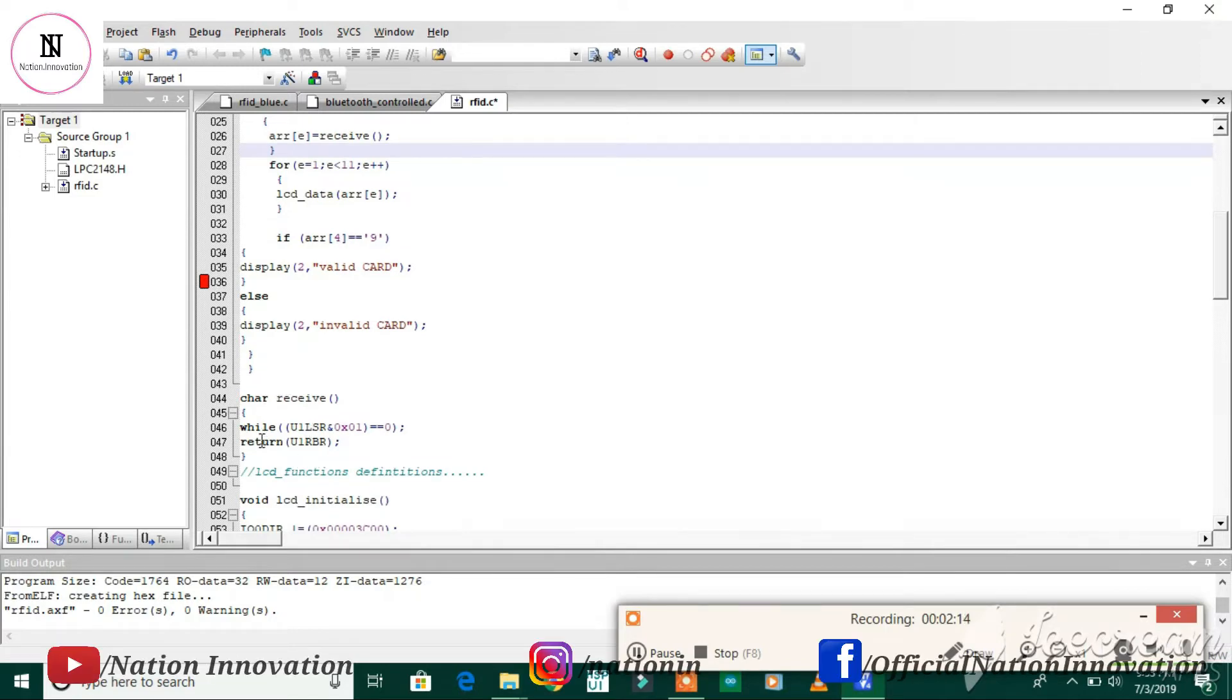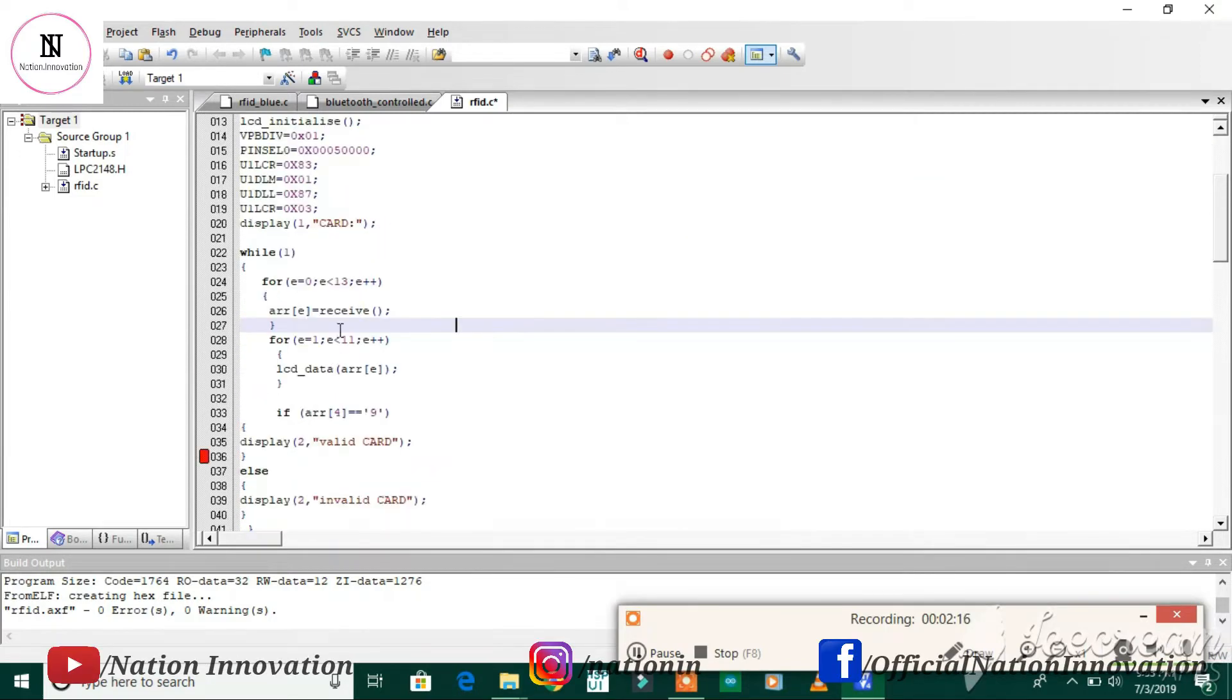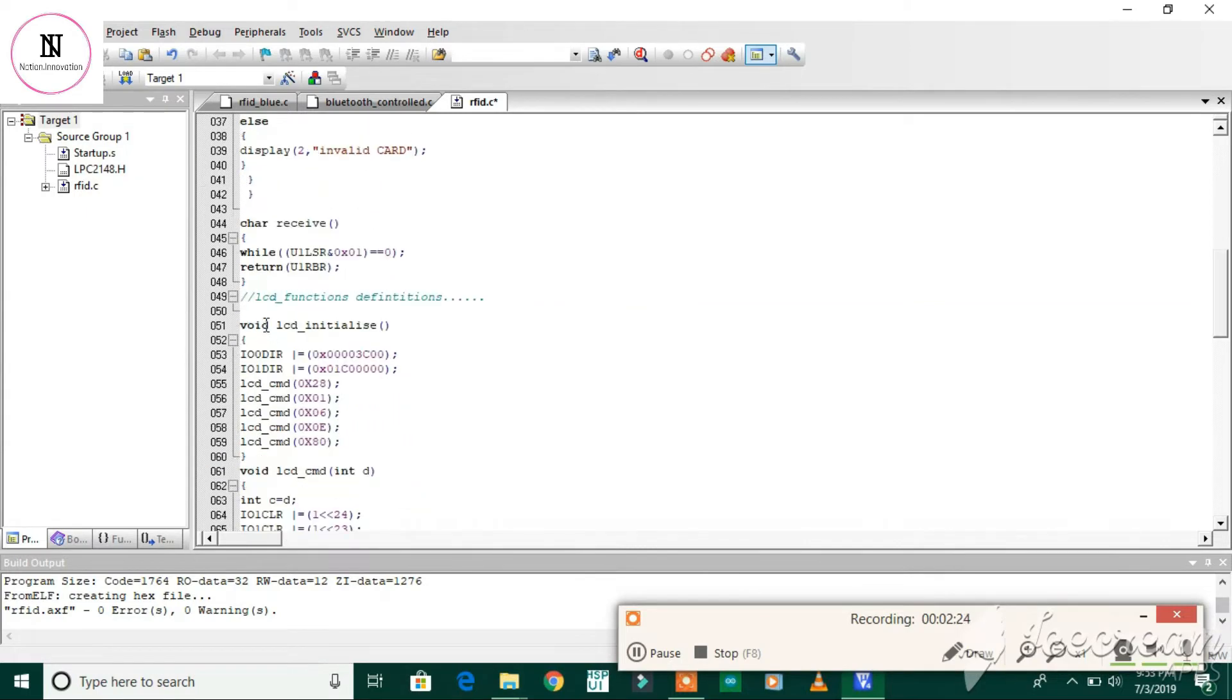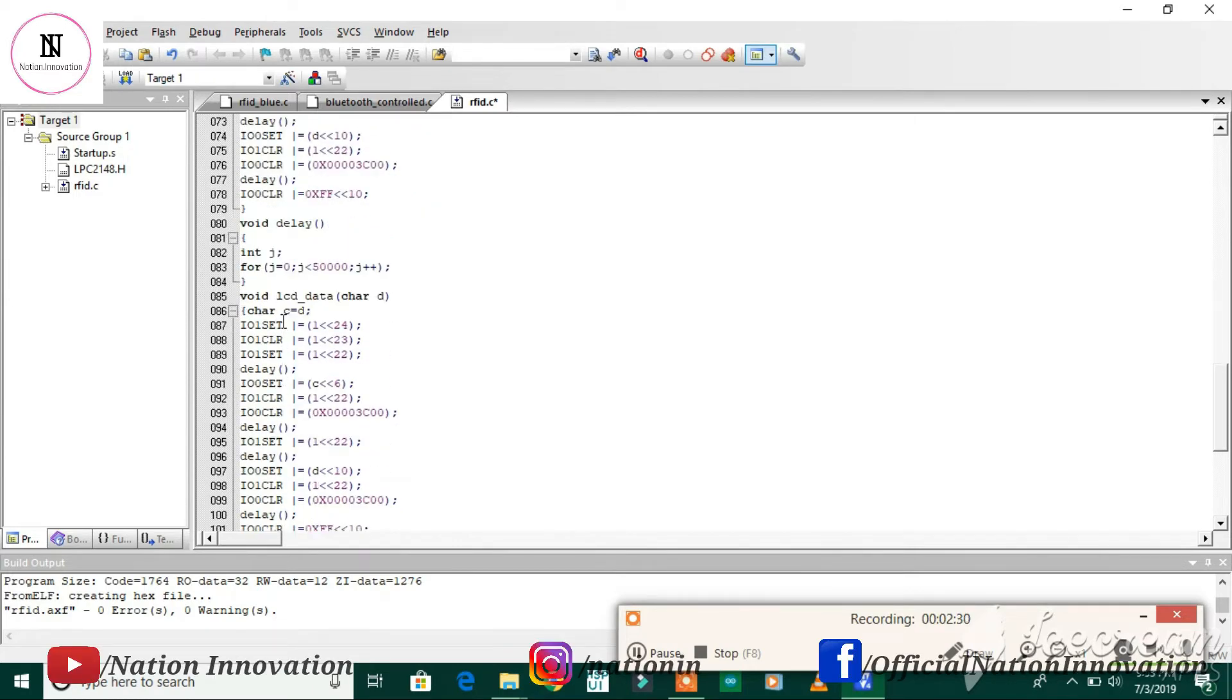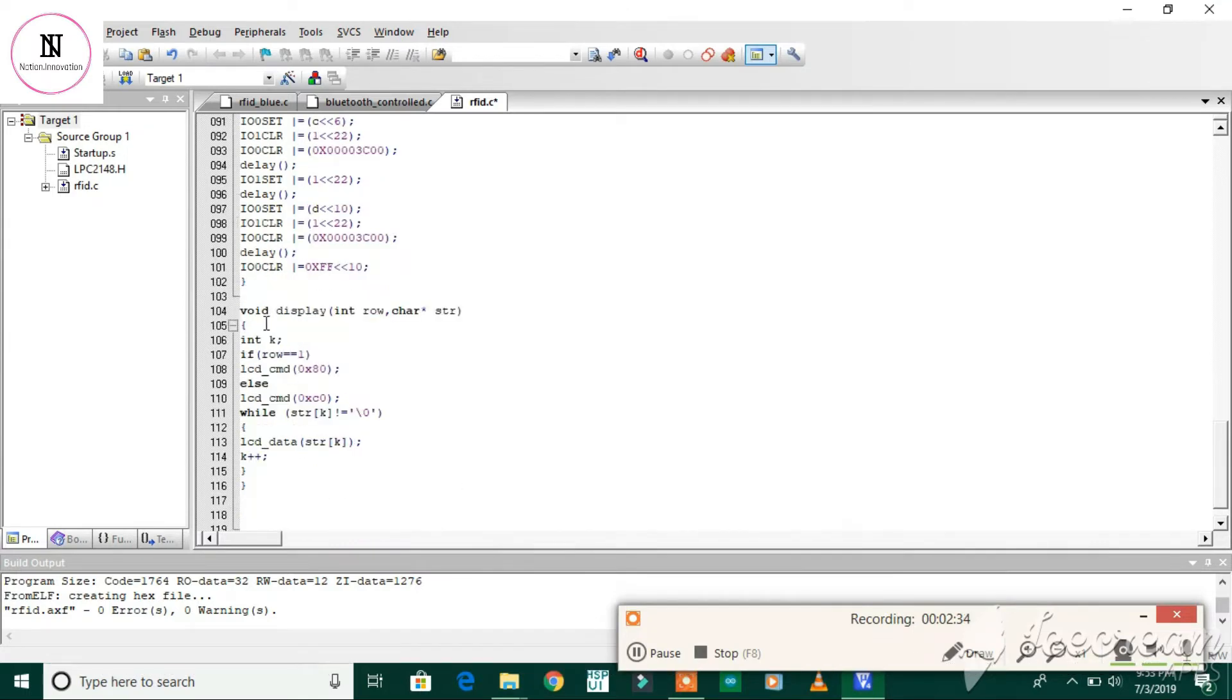This is the receive function of the UART. Using this, we get the card number onto the LCD. These are the remaining LCD function definitions: LCD initialize function, command function, data function, and delay. These display on the first or second row.